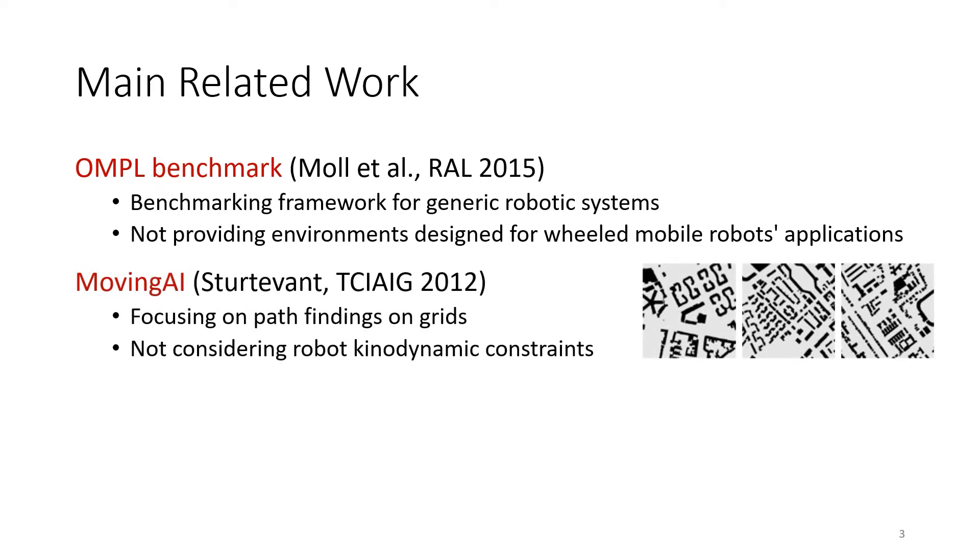The Moving AI benchmark provides various grid environments, such as the city's dataset, which we also support in this work. It focuses on grid-based path planning and does not account for the kinodynamic constraints that wheeled mobile robots impose.